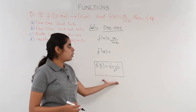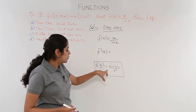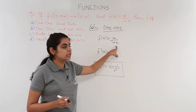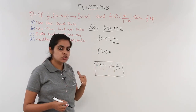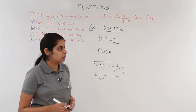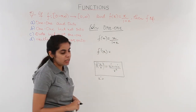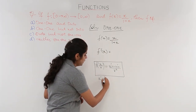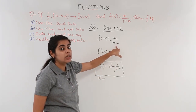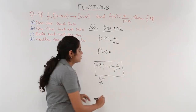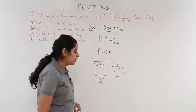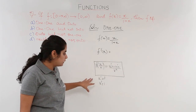We identify u as the numerator x, and v as the denominator 1 plus x. Then we find u' — the derivative of the numerator x — which is 1. Next, v' is the derivative of 1 plus x: 1 is a constant so its derivative is 0, and x is a variable so its derivative is 1. So both u' and v' equal 1.